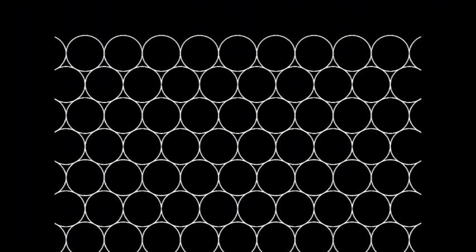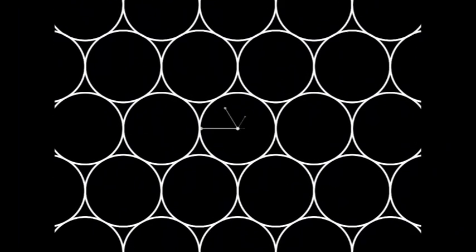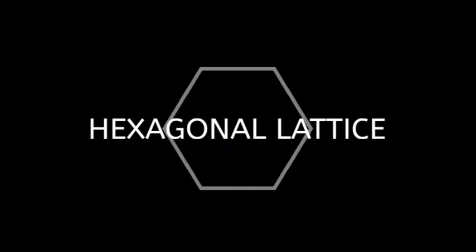Look at the way circles pack in their densest form. Notice each circle has exactly six neighbors. This is called a hexagonal lattice, and it's how circles pack naturally.